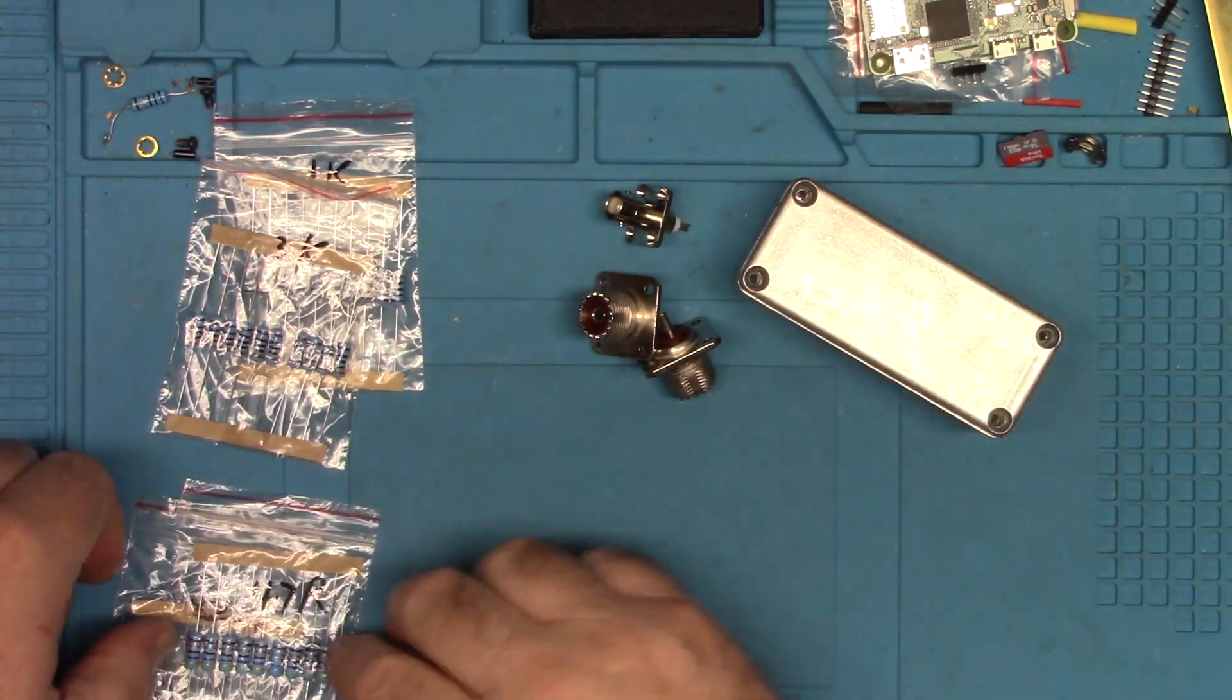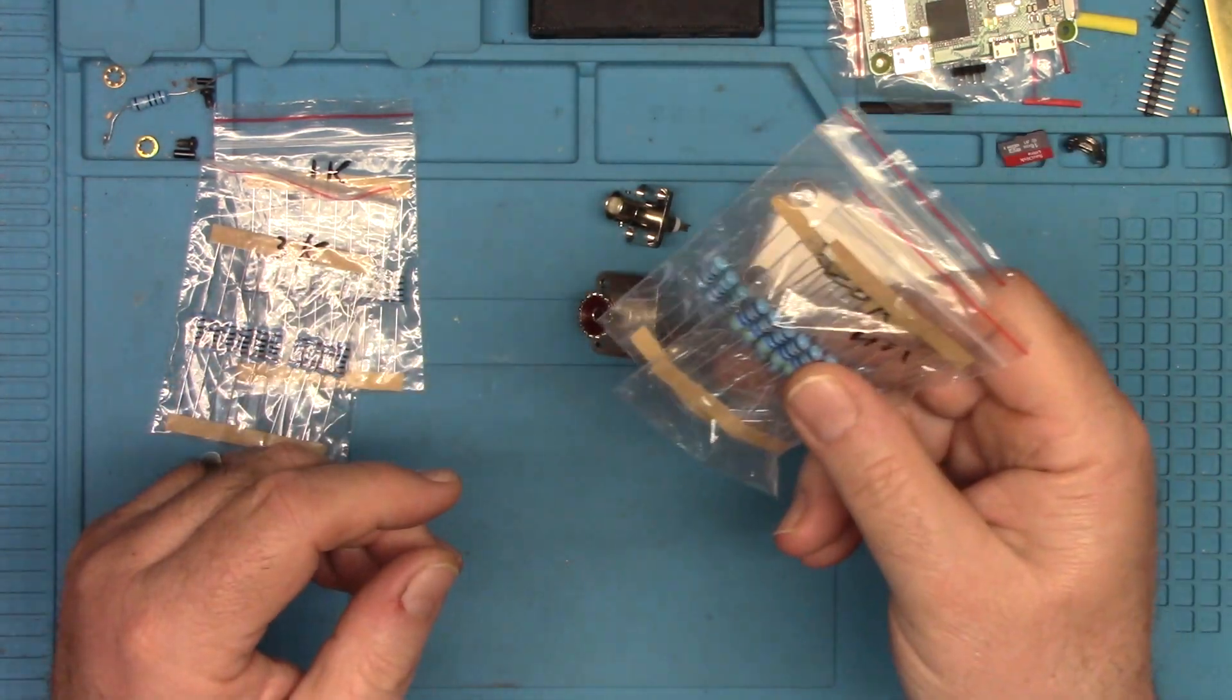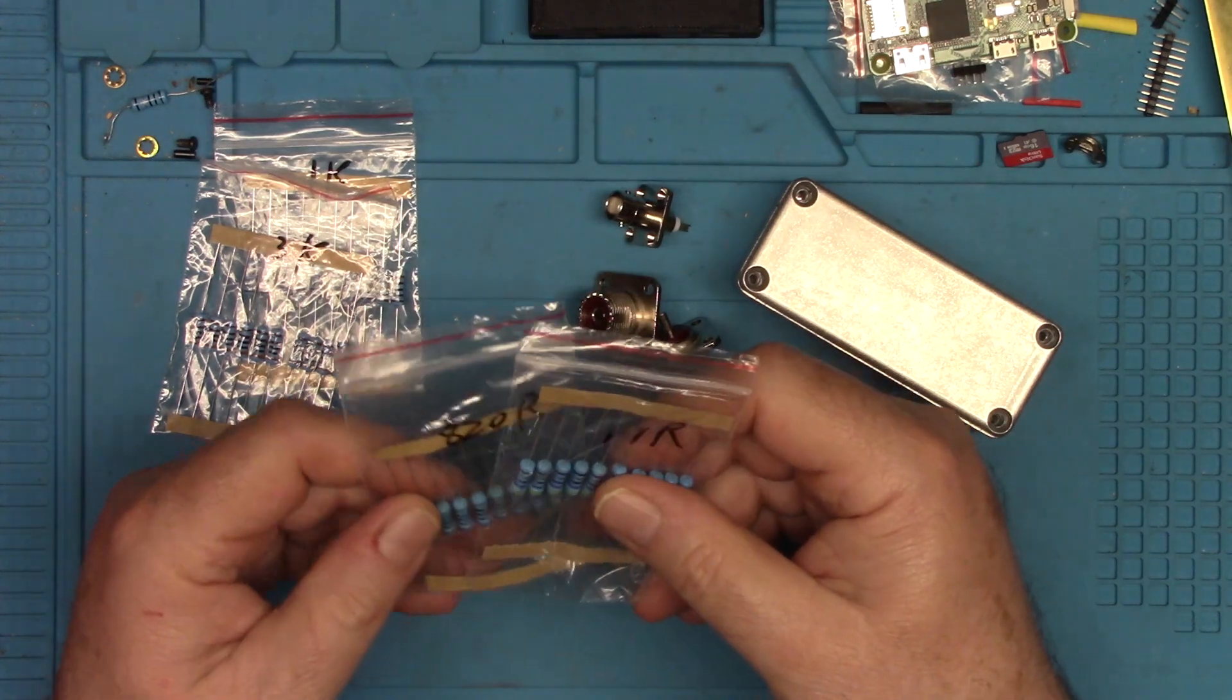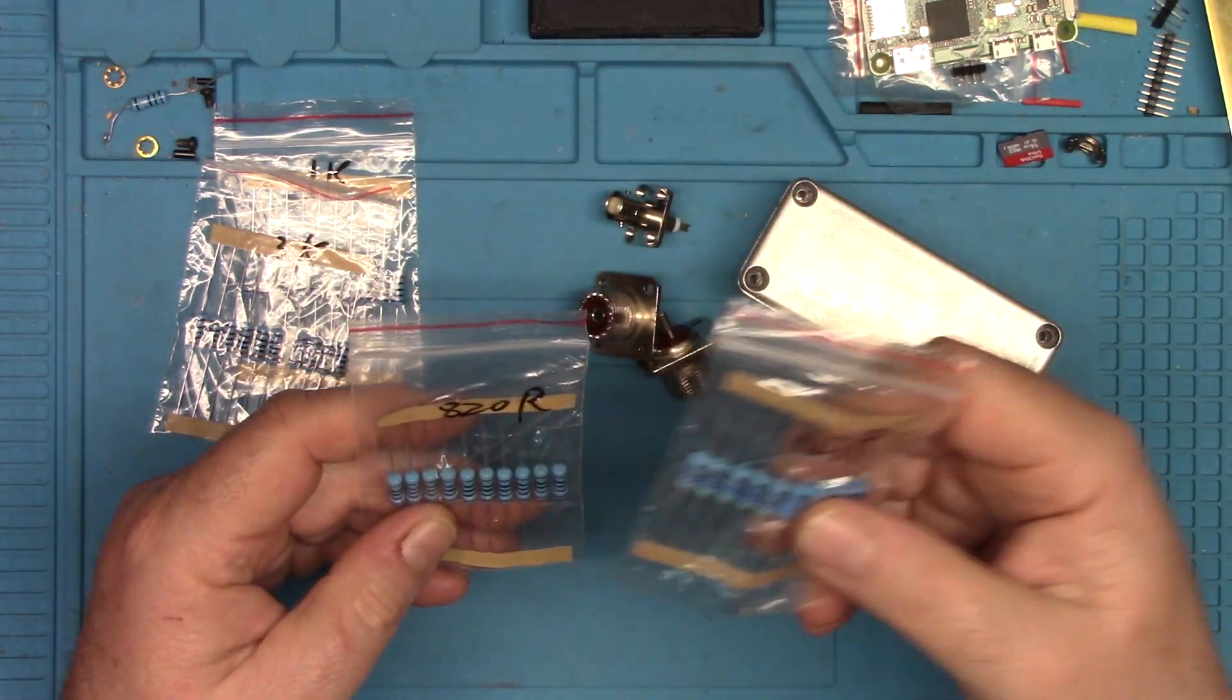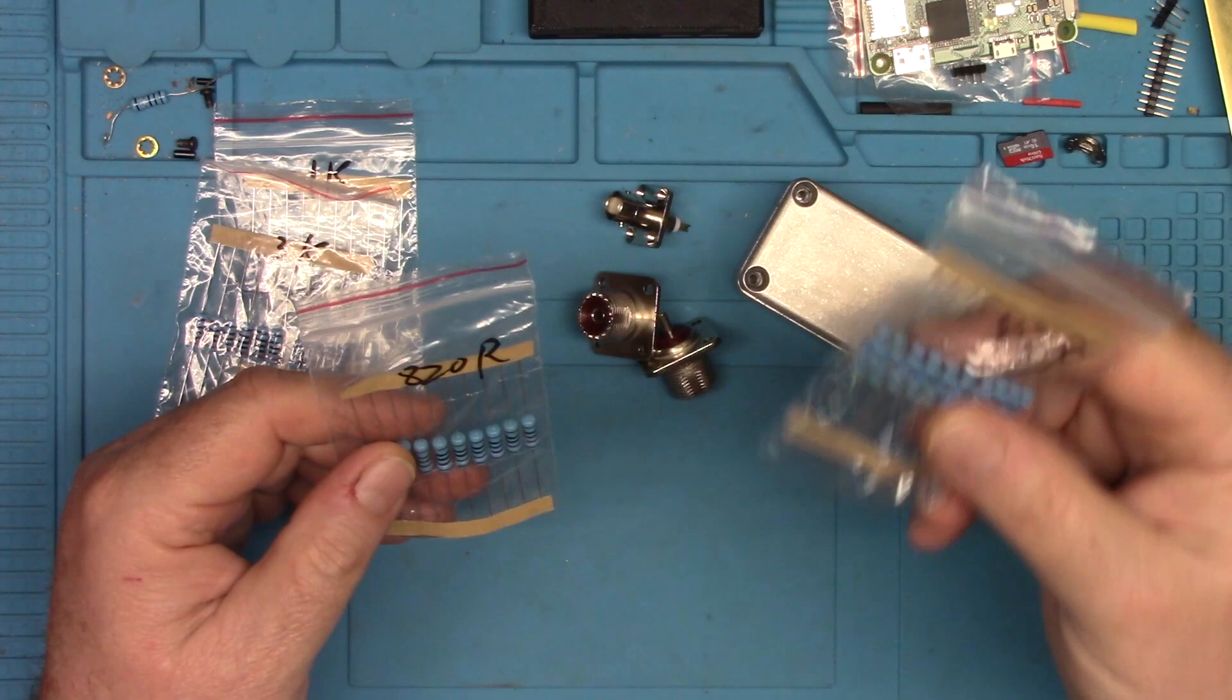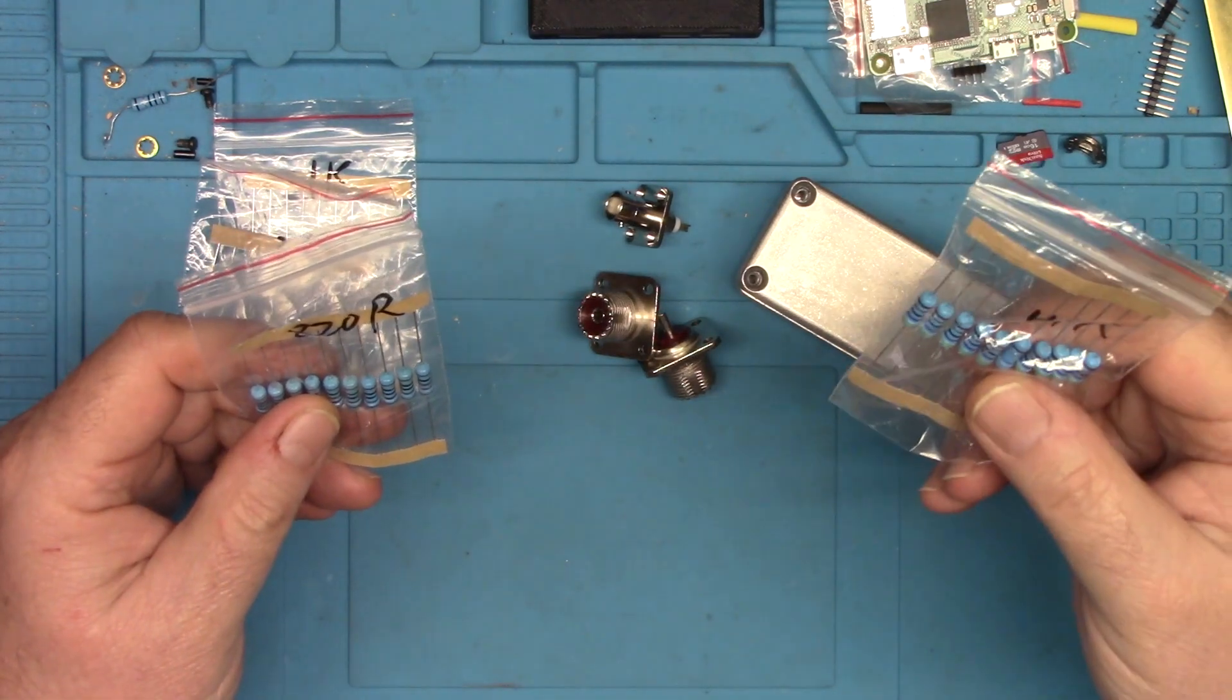I have a 47 ohm and 820 ohm resistors right here. And this would follow the same design that's in the document close enough for ham work, right? I don't have a 50 ohm resistor, but I've got 47s close enough. And I do have 820 ohm resistors. So I could use three of these and then one of these for the impedance match at the end, still going to use that.